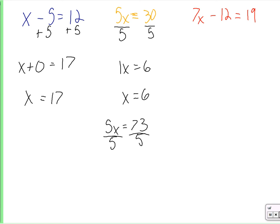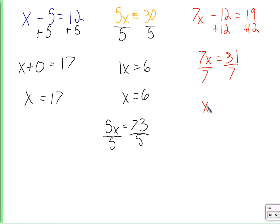How about this last one? We do the same thing — negative 12 plus 12 cancels, and we have 2 plus 12. So we have 7x equals 31. It's not obvious what x is. So we divide both sides by 7: x equals whatever 31 divided by 7 is. That's 4.42857, and that decimal will go on and on forever — a repeating pattern that never ends.